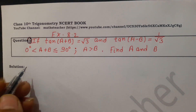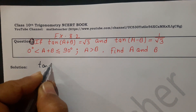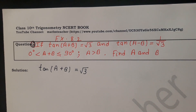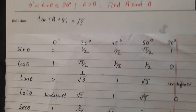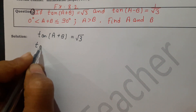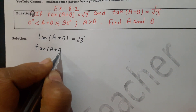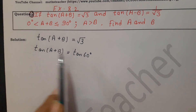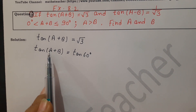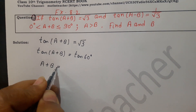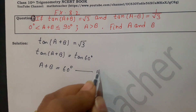For the first equation, we write tan(A+B) = √3. Now let's look at the table — which angle gives tan θ = √3? From the table, tan 60° = √3. So we substitute: tan(A+B) = tan 60°. Since both sides are equal, we get A+B = 60°. This is Equation 1.